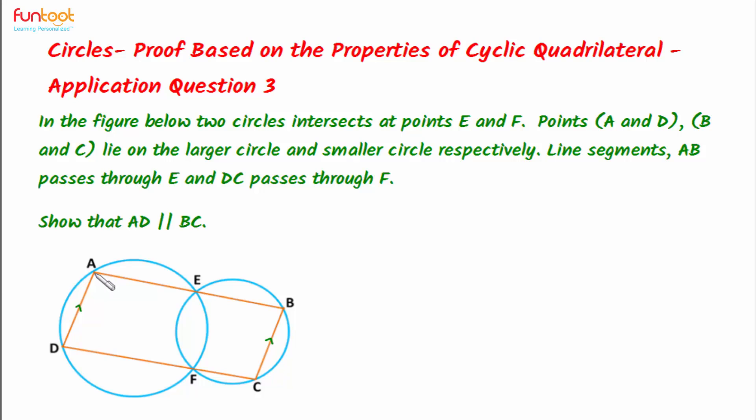Here points A, E, F and D lie on the same circle, and points E, B, C and F also lie on the same circle. If we join E, F then we can have two cyclic quadrilaterals: AEFD and EBCF.